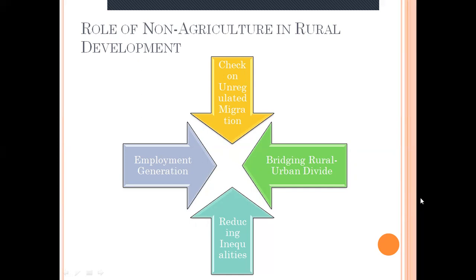Rural income distribution is much less unequal in areas where a wide network of non-farm employment exists. To lower that gap, non-agriculture sectors help. If people get employment in rural areas and can generate more income, it will stop rural-to-urban migration. It bridges the rural-urban divide, reduces inequalities, and employment generation is obviously one of the important contributions of the non-agriculture sector in rural development.